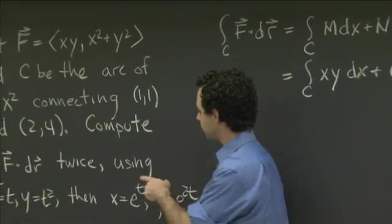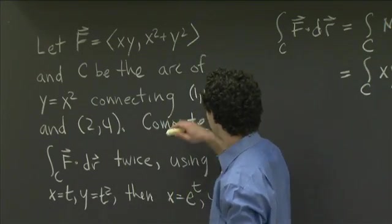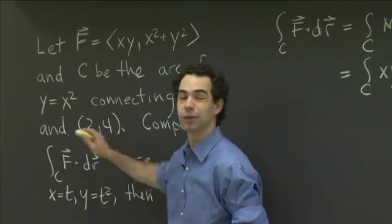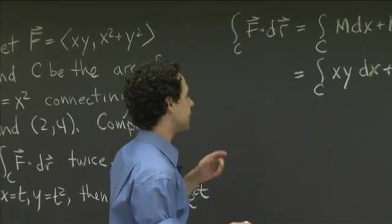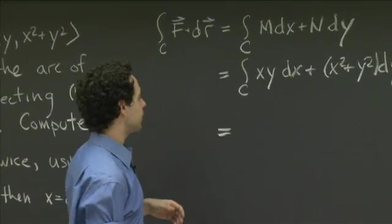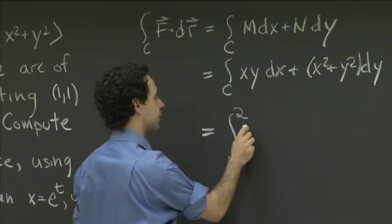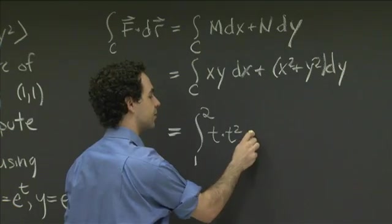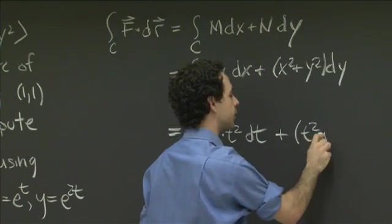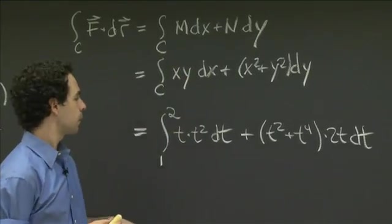And now we just need to plug in our two different parameterizations, and this will turn into an integral that we can evaluate. So let's have a look. In our first parameterization, we want to have x equals t and y equals t squared. And we want this parameterization to go from the points (1,1) to the point (2,4). So that means that t, x, t is going from 1 to 2. So in the first part, t is our parameter and it's going from 1 to 2. So x, y is going to be t times t squared, and dx is dt. And then plus x squared plus y squared is t squared plus t to the fourth, and dy is times 2t dt, since y is t squared.